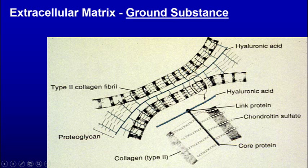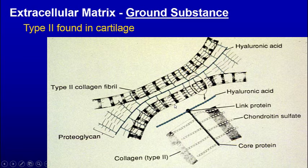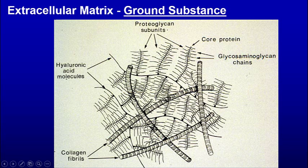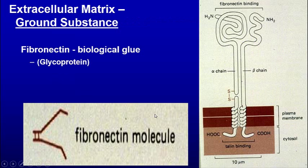Here you can see hyaluronic acid with the chondroitin sulfates coming through, and type 2 collagen attaching to it. Here we can see the mesh — there needs to be type 1 collagen and then the ground substance, which is proteoglycans, protein core, and hyaluronic acid.